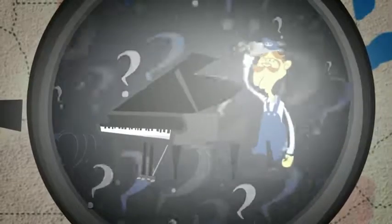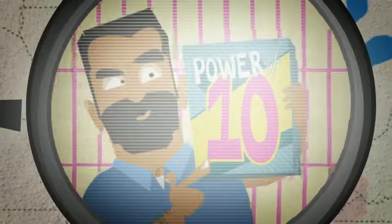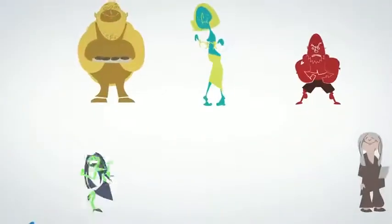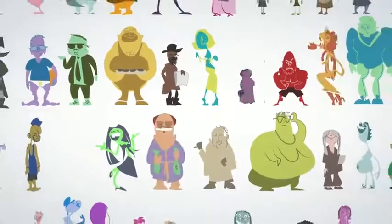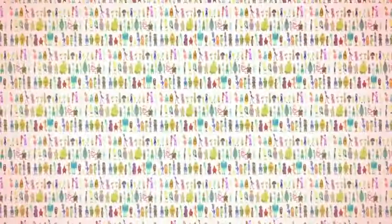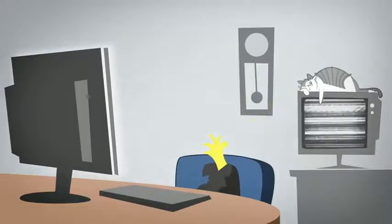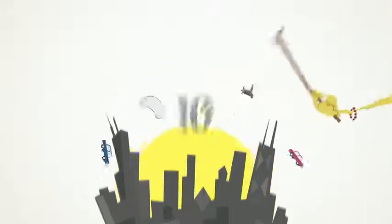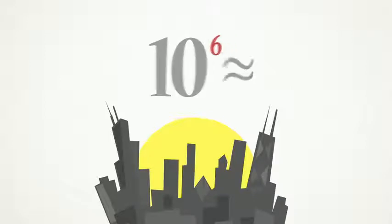One classic Fermi estimation problem is to determine how many piano tuners there are in the city of Chicago, Illinois. At first, there seem to be so many unknowns that the problem appears unsolvable — that is the perfect application for our power of 10 estimation, as we don't need an exact answer. We can start by determining how many people live in Chicago. We can estimate the magnitude of the population as 10 to the power of 6, which serves as an accurate estimation for the actual population of just under 3 million people.